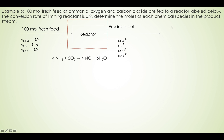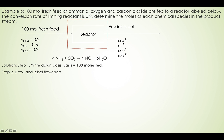Determine the moles of each chemical species in the product stream. Step one: write down the basis. From the problem statement, we know the basis is 100 moles fresh feed of mixture, so we write down basis is 100 moles fed. Step two: draw and label the flow chart. In this problem, the flow chart is already given, so we just draw the system boundary to identify material exchange — what flows in and what flows out.